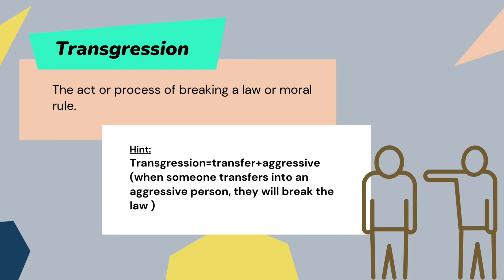The hint is: transgression — transfer, aggressive. When someone transfers into an aggressive person, they will break laws, commit crimes, and show offense against every law. They will not follow the law, so they will have a transgression or transgressive behavior.